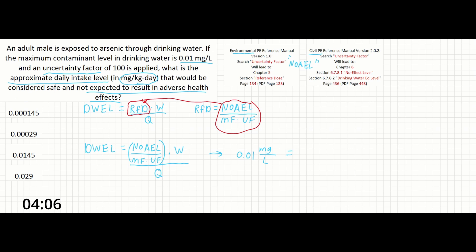We are solving for the NOEL. Our modifying factor MF isn't given, so we will assume that it's 1. And our uncertainty factor is given as 100.